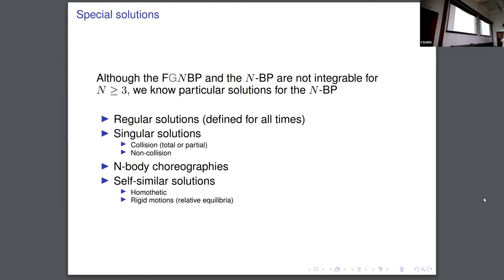Also very important are the self-similar solutions, which are the homothetic solutions, in which all the bodies move in a straight line that goes to the center of mass. The homothetic ones are really important. All the collisions in the system tend to a homothetic solution. So they're very important. And then we arrive to the kind of solution that we are trying to find here — the relative equilibrium solution.